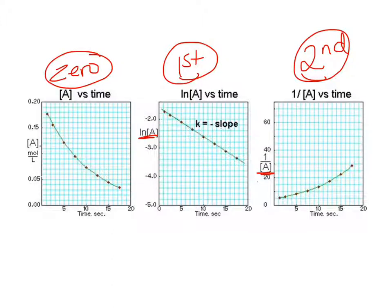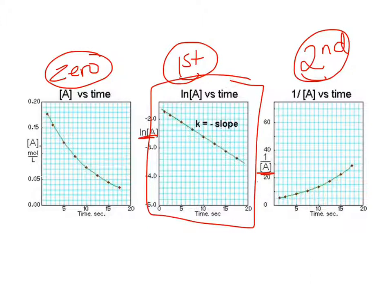Only one of these plots would best fit a straight line. For instance, for this reaction I plotted concentration of A versus time, then the natural log of A versus time, then one over A versus time. Notice only one of them gives a straight line — that means the reaction is first order with respect to A. This is based on experimental data or the data in a chart, and you should know either of those ways as an experimental way of determining the rate law.